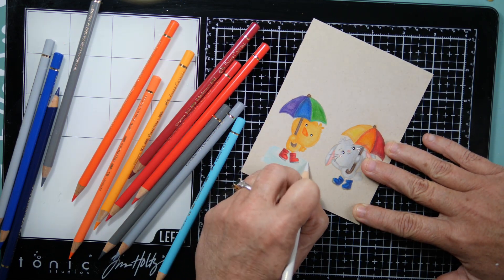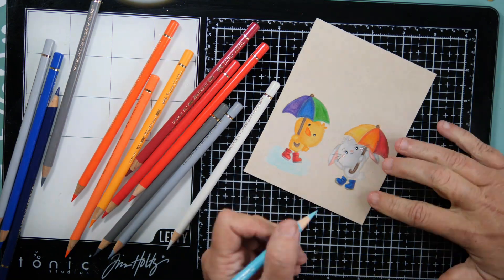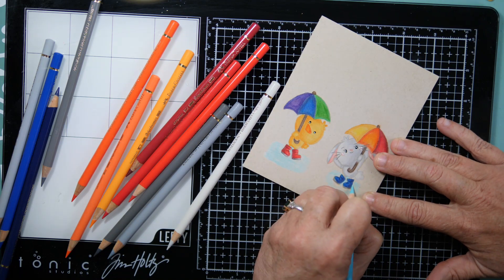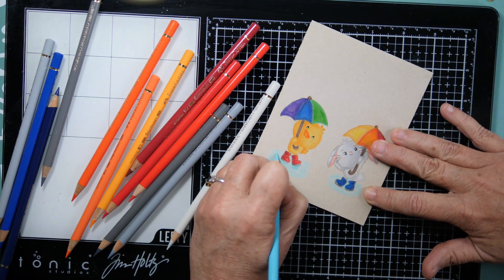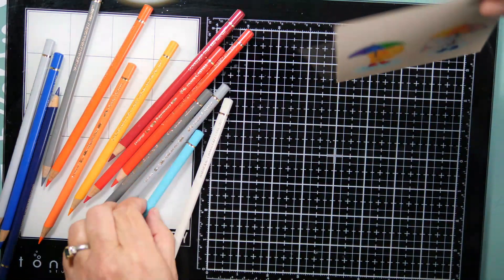Here's something that I changed up on the card. I did decide to come in and put little puddles under their feet instead of grass or dirt. These puddles are going to ground my critters and then I will come in with a darker blue and add a little shadow underneath their feet.